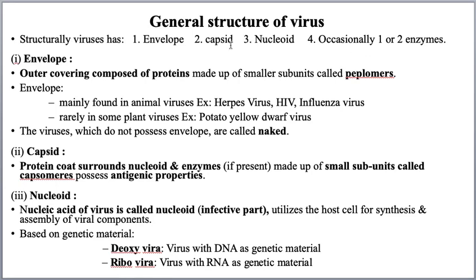The first part is the envelope — the outermost covering of the virus body. This outermost covering is made up of proteins. The envelope is made up of small subunits called peplomers. Just like a wall is made up of small bricks, the envelope is made up of small protein subunits called peplomers. Envelope is mainly seen in animal viruses and very rarely in plant viruses.